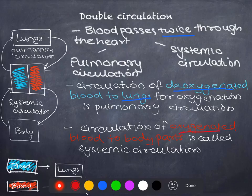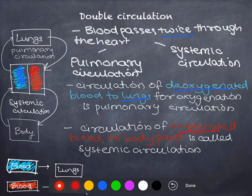As you can see, we have color-coded it here. Oxygenated blood is shown in red and deoxygenated blood is in blue. So pulmonary circulation is represented by the blue color and systemic circulation is represented by red.